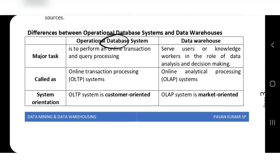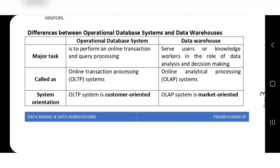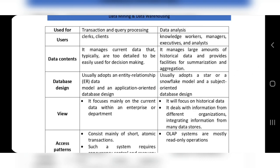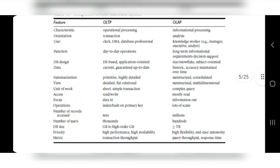The main difference between an operational database (DBMS) and a data warehouse is their purpose. Operational databases are customer-oriented and used for transaction processing — simple queries like showing student details or employee sales. Data warehouses are market-oriented and used for analytical purposes — understanding trends, patterns, and complex business insights like which product yields more profit.